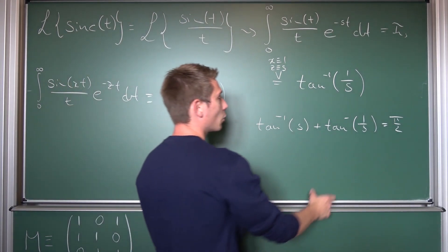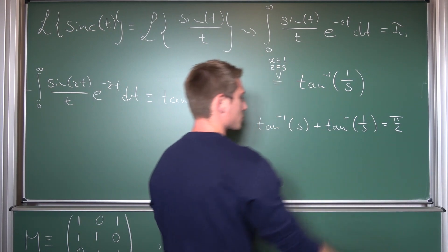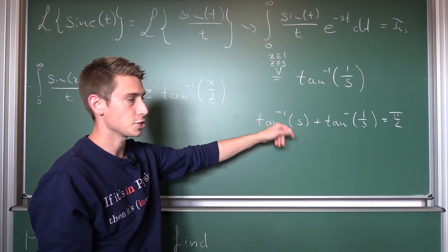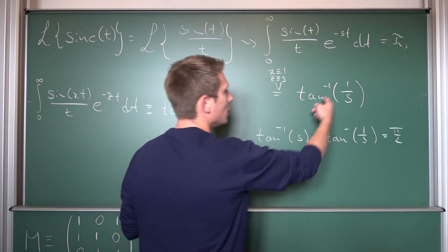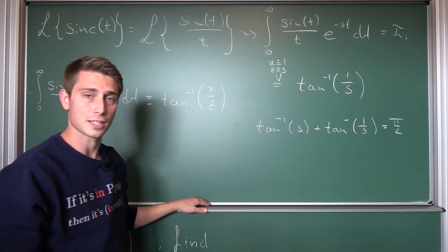You are going to solve for this part right here. You are just going to add inverse tangent of s on both sides, then you are going to get the inverse tangent of one over s, and then you are done.